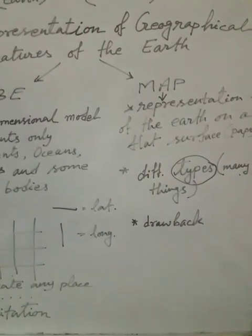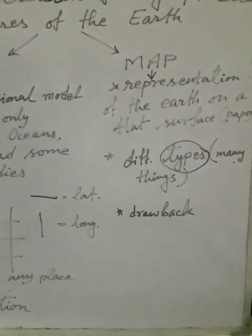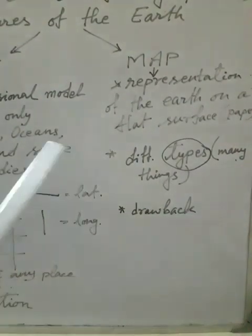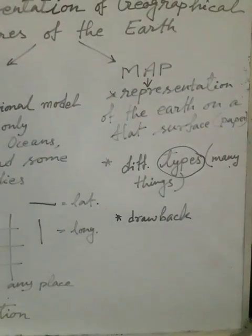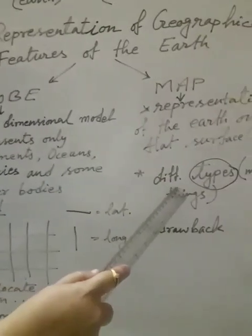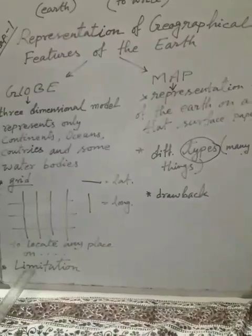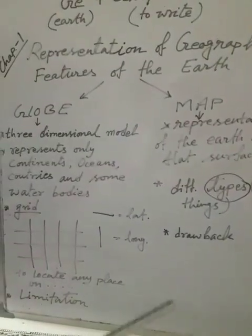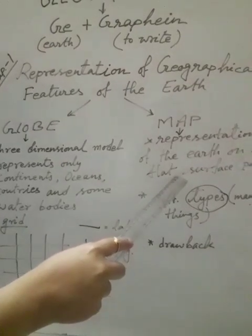Another positive side of a map is the variety of information it provides. A map can represent many things about the Earth — whole or part. From a map we get information about mountains, plateaus, plains, rivers, settlements, population, climate, and much more, whereas a globe gives us only limited information. So a map is more useful than the globe. The drawbacks of a globe are the positive sides of a map.